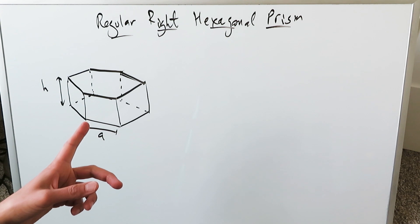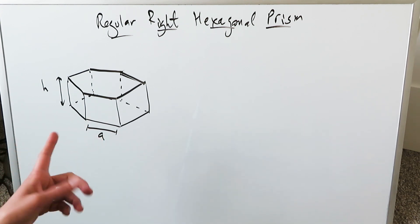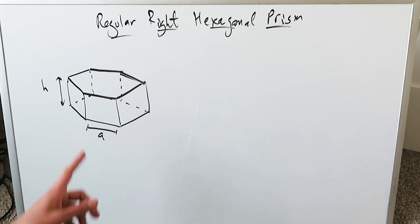I had a request to present an integral calculus procedure for determining the volume and surface area for a regular right hexagonal prism.